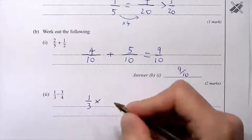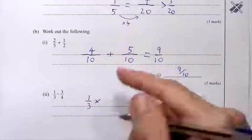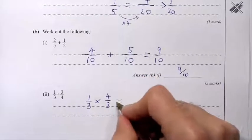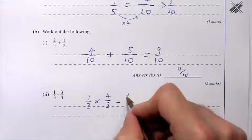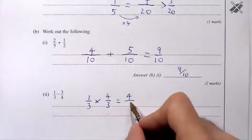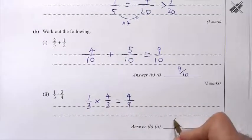1 third times. Now, instead of 3 over 4, it's 4 over 3. And now it's easy because we times the tops. So 1 times 4 is 4. And times the bottoms. 3 times 3 is 9. So it's 4 ninths.